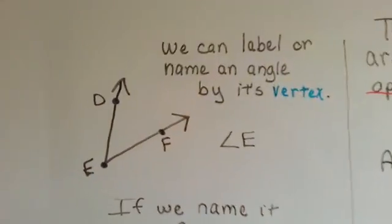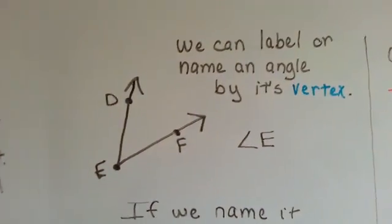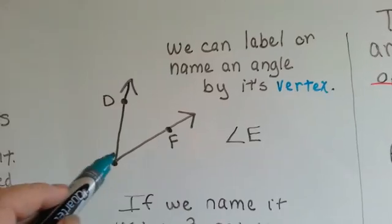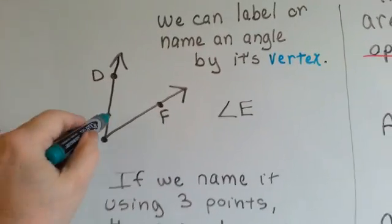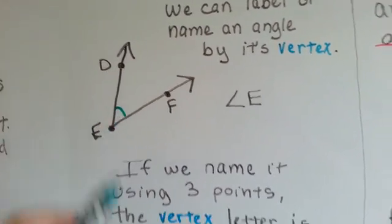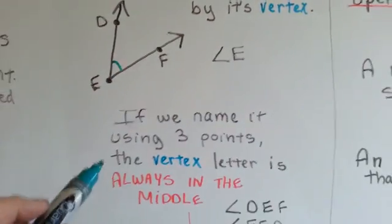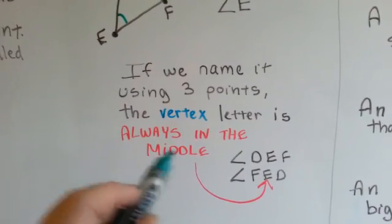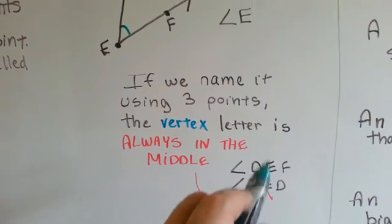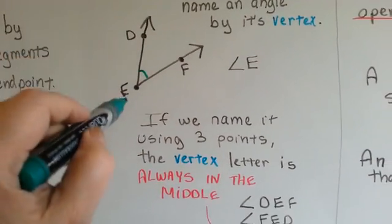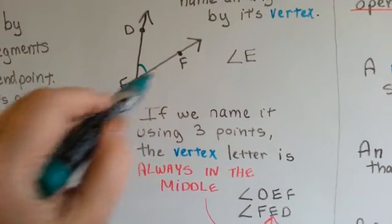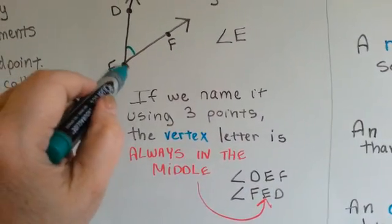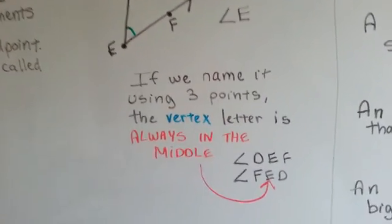We can label or name an angle by its vertex. This would be angle E right here — that is the angle. If we name it using three points, the vertex letter is always in the middle: D, E, F or F, E, D. The E is always in the middle because that is the vertex.